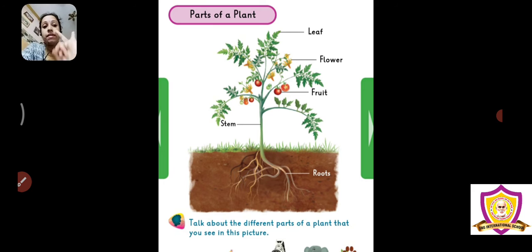What are they? Roots, stem, fruit, flower and leaf. Now let's see what are the properties of each of these parts.